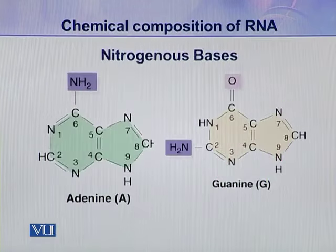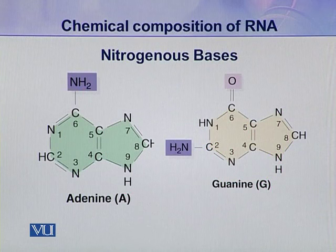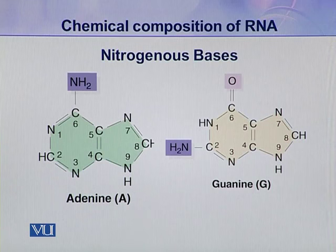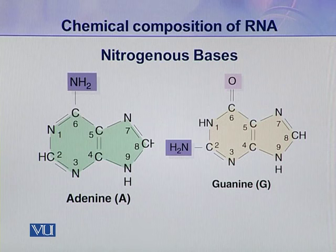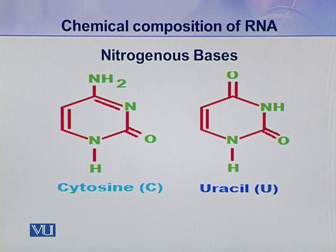The second component of ribonucleic acid is the nitrogenous base. There are mainly two types of nitrogenous bases present in ribonucleic acids: purines and pyrimidines. The two types of purine bases — adenine and guanine — are present in the ribonucleotide. These two bases, adenine and guanine, were also present in the deoxyribonucleotide.